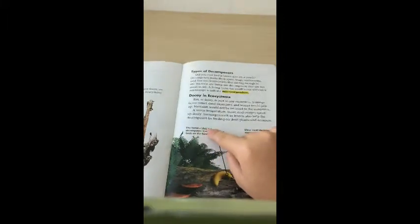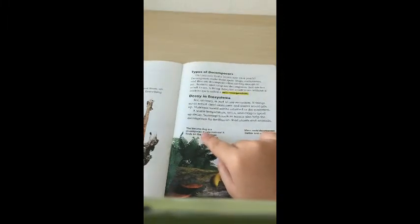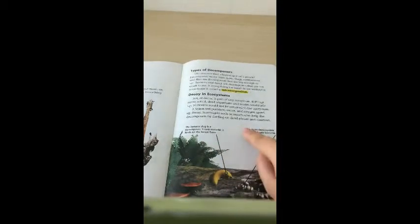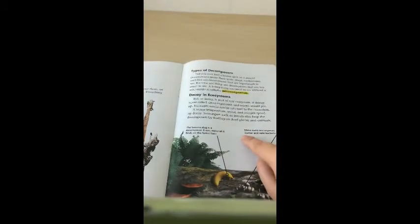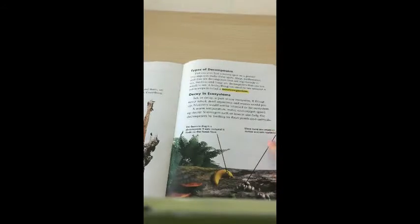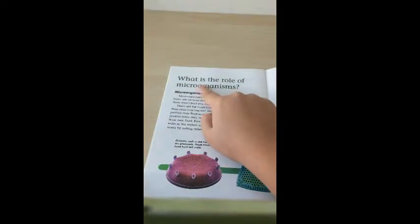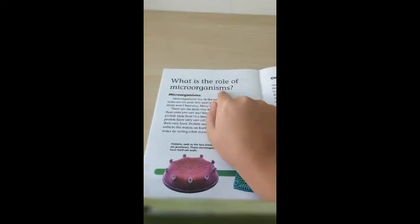The banana slug is a decomposer. It eats material it finds on the forest floor. Slime mold decomposes matter and eats bacteria.